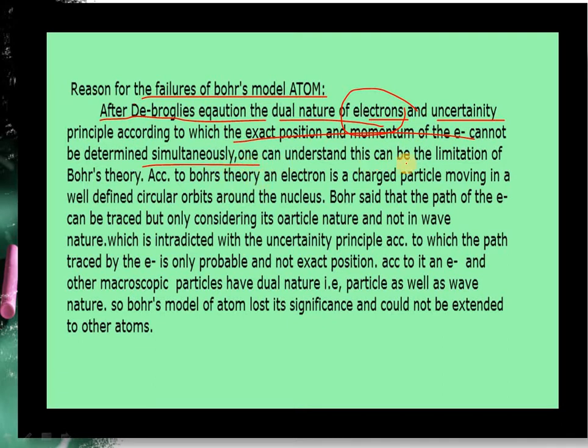One can understand this is the limitation of Bohr's theory. According to Bohr's theory, an electron is a charged particle moving in a well-defined circular orbit around the nucleus. Bohr said that path of the electron can be traced but only considering its particle nature.